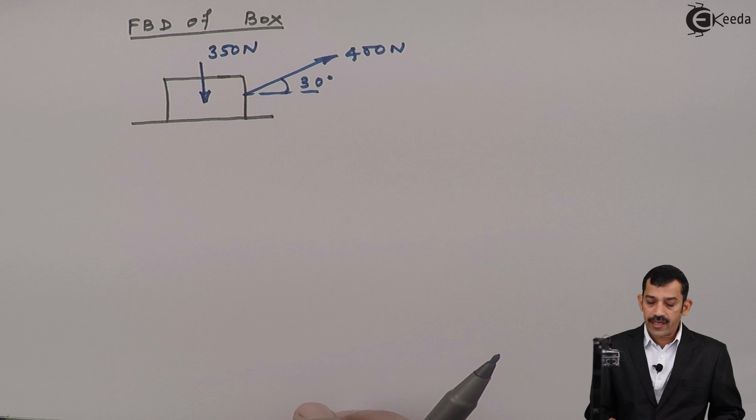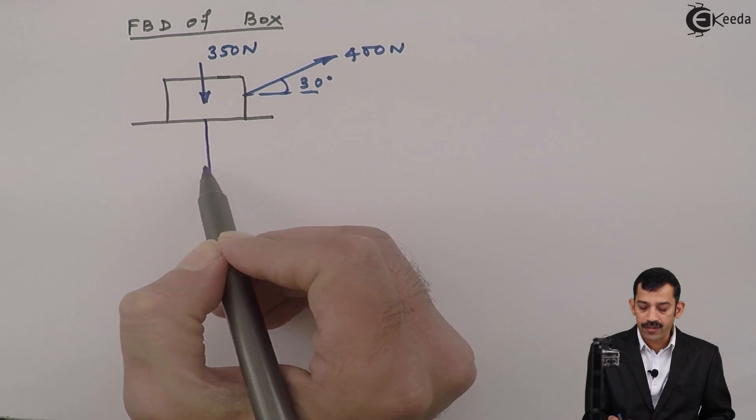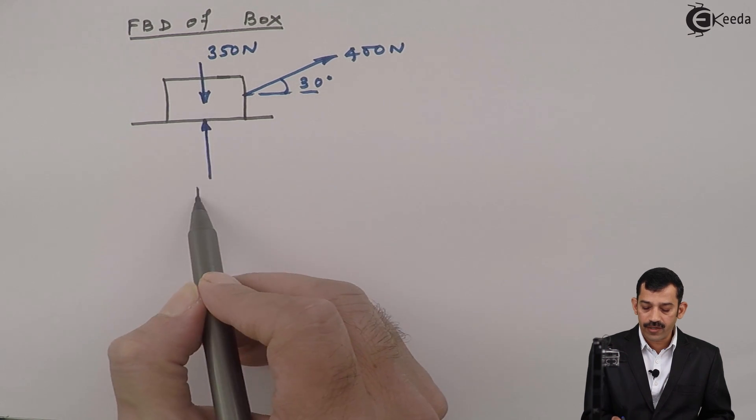Is nothing but 400 Newton inclined at an angle of 30 degrees with horizontal. Then normal reaction acts on the block. Normal reaction acts normal to the contact surface. That means in upward direction. This is what Rn.